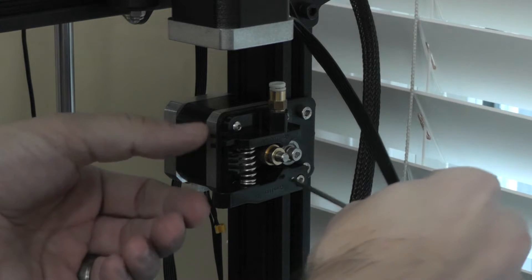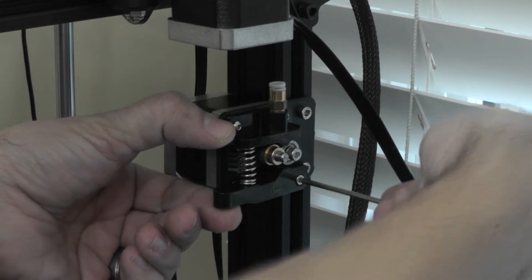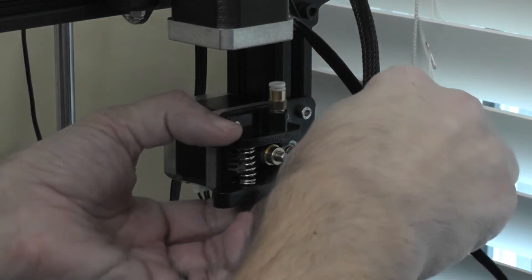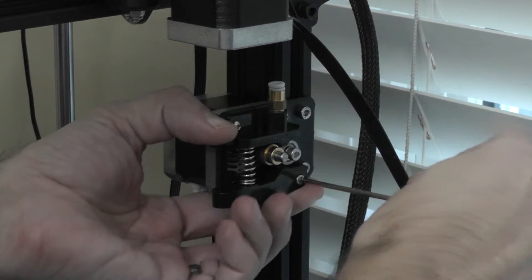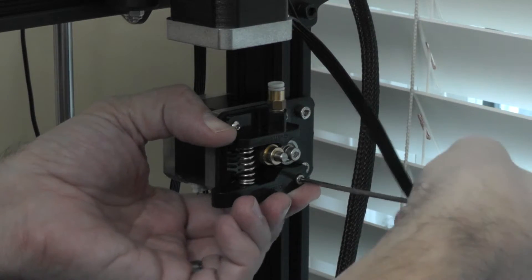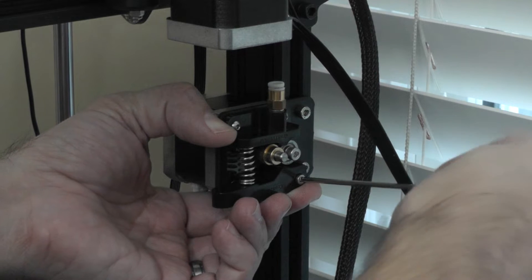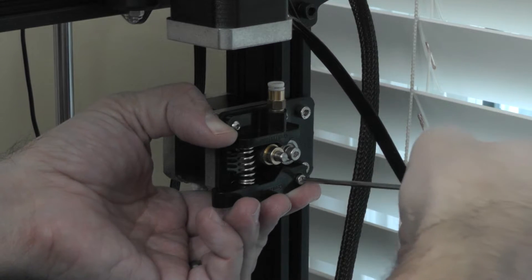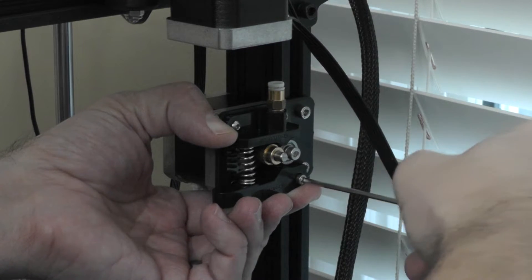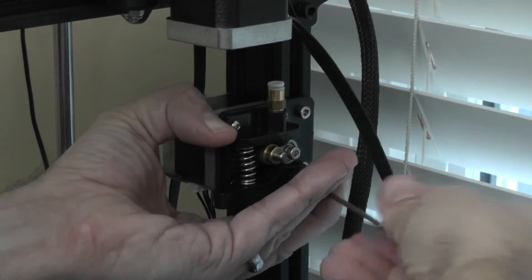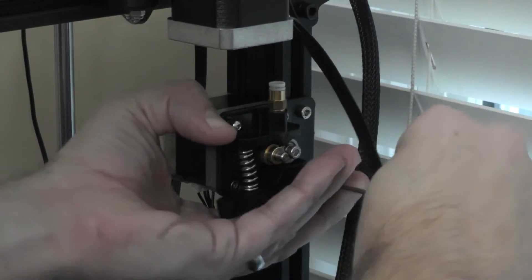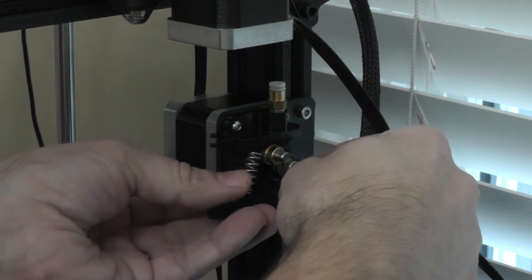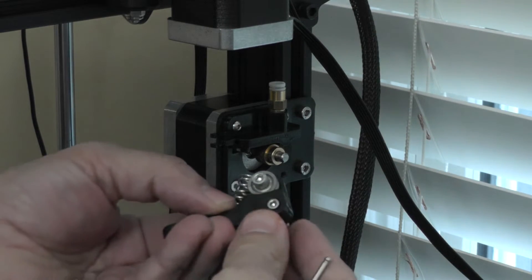Next up, we're going to take our medium-sized allen wrench, and we can start taking the extruder arm off. Now, make sure you hold this in place so that when the spring is loose, it doesn't come flying apart. And then once it comes loose, you'll feel it snap. We're going to take off this whole assembly here.